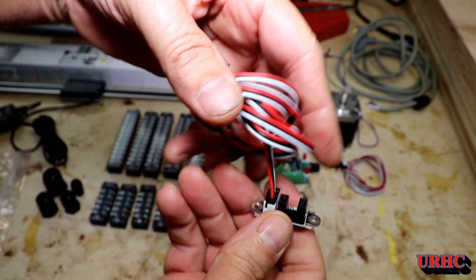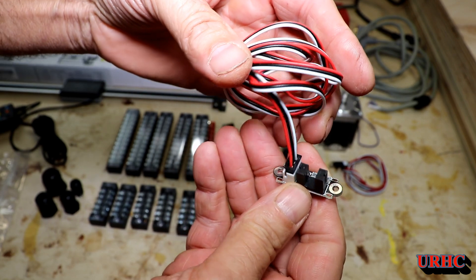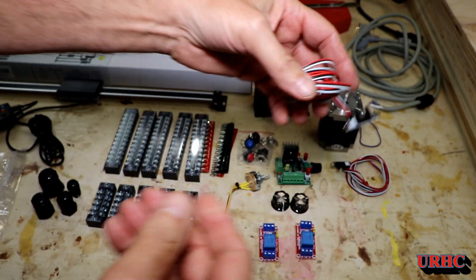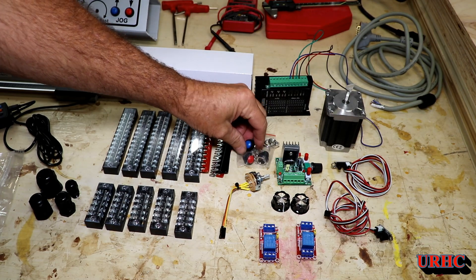And then these are the optical switches that I am using for the end limits to stop the motors or to set the home if I want to set a home in the front.